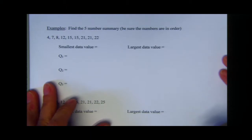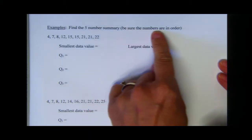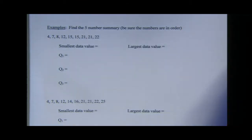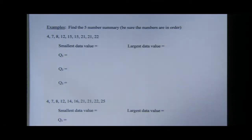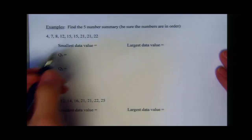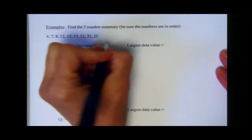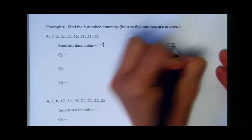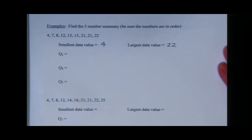Find the five number summary — be sure the numbers are in order. To find the five number summary for a box and whisker plot, numbers have to be in order from smallest to largest. For this first example, the numbers are already in order, but that won't always be the case on WebAssign, so make sure they are in order. My smallest number is four and my largest number is 22.